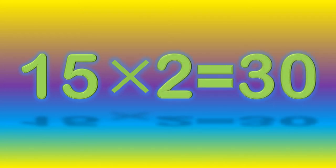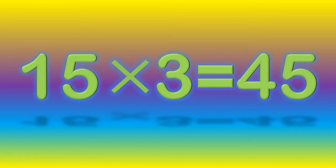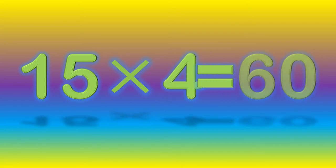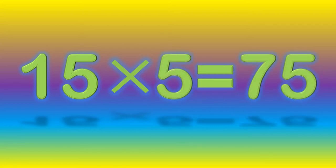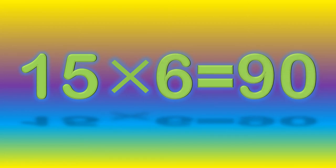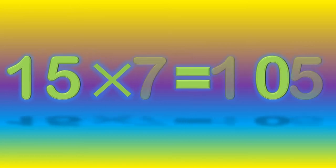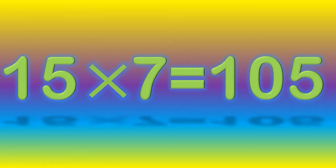15 2s are 30. 15 3s are 45. 15 4s are 60. 15 5s are 75. 15 6s are 90. 15 7s are 105.